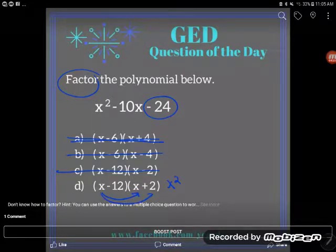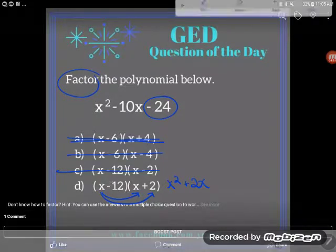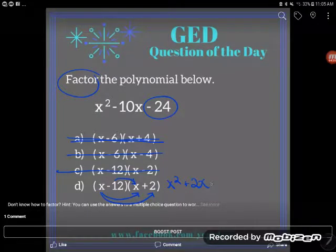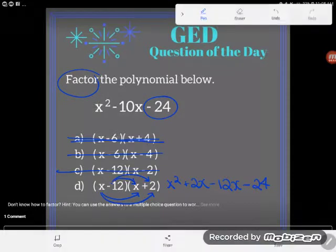x times positive 2 would be positive 2x. Negative 12 times x is negative 12x, and negative 12 times positive 2 would be negative 24.